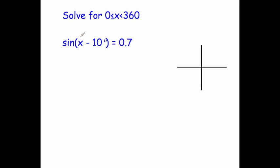In this question we've been asked to solve sin(x - 10°) = 0.7 between 0 and 360 degrees. So first of all let's make sure your calculator is in degrees mode.